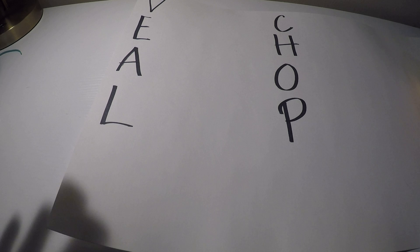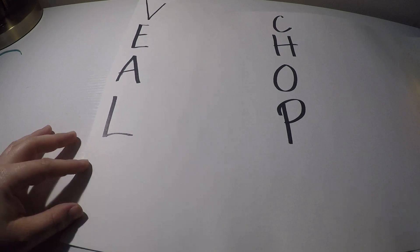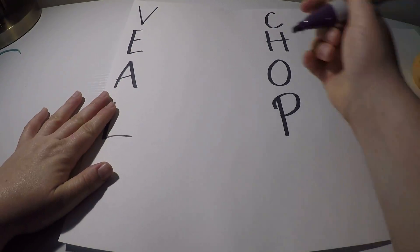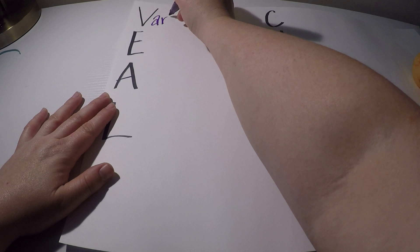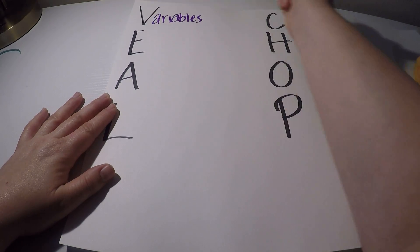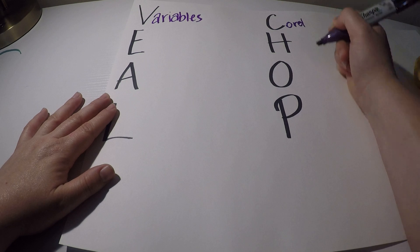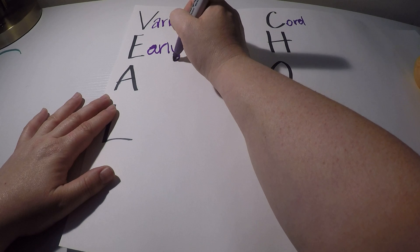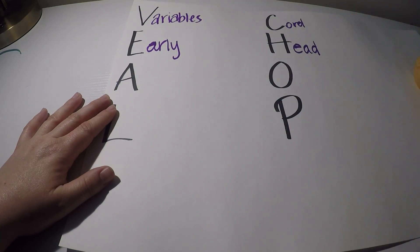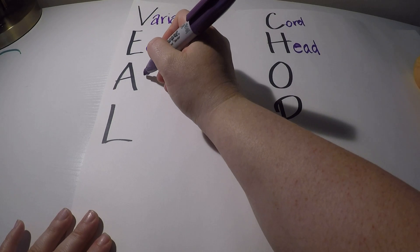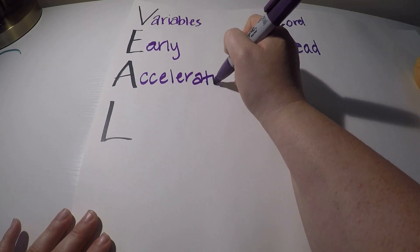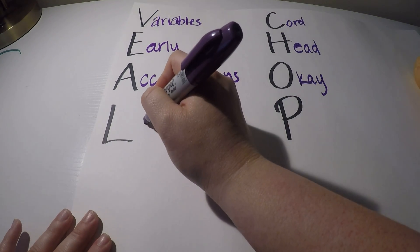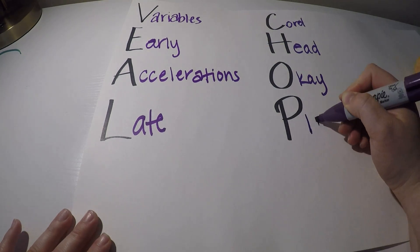So the mnemonic that we're using for this is called veal chop. And veal chop will make sense here in just a second. It's a quick and easy way to remember your decelerations or changes in fetal heart rate and what causes them. So when we look at V, we're talking about our variables. And remember those are caused by cord compression. When we are talking about our E, that's our earlies. And those are caused by head compression. The A stands for accelerations. And those are okay. And then our L stands for late. And those are problems with the placenta.